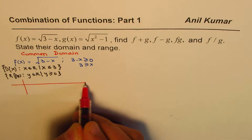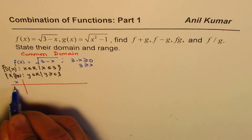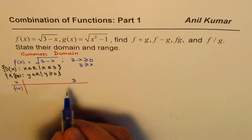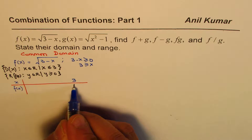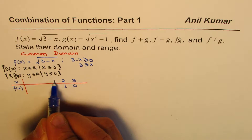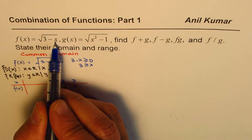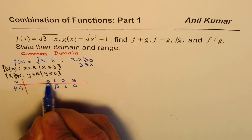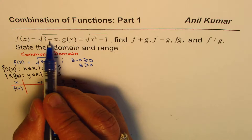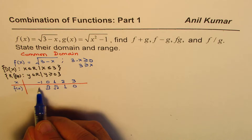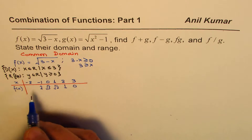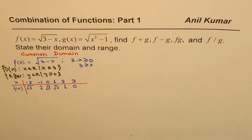Here are the x values and corresponding f of x values. Since the domain is x less than or equal to 3, I start with x equals 3: f of x equals 0. At x equals 2: square root of 1 equals 1. At x equals 1: square root of 2. At x equals 0: square root of 3. At x equals minus 1: square root of 4 equals 2. At x equals minus 2: square root of 5. These are the values for f of x.